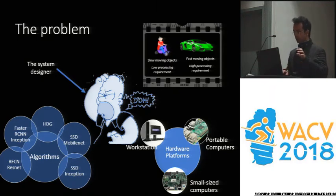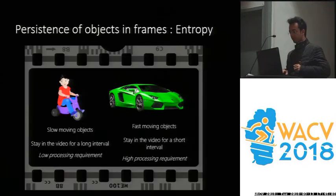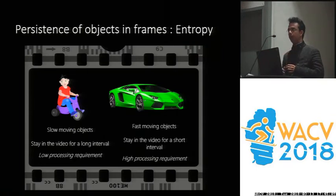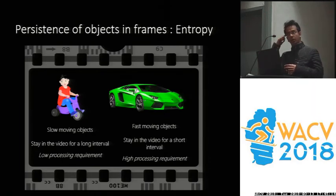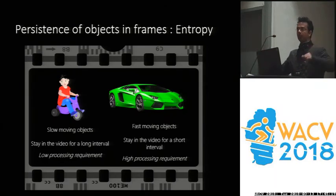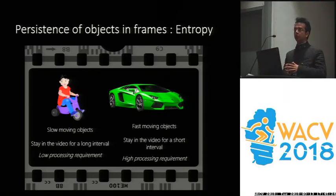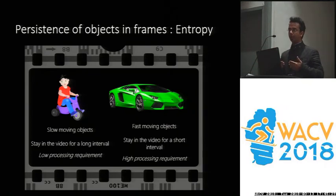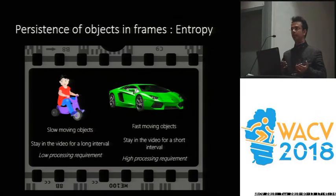I'm going to describe the key ideas which we have incorporated in our work. The first key idea we have called entropy — this is about the persistence of objects in the frames. For example, if you look at a camera feed acquired in this room, the feed would be more or less constant because people are not moving very much. So even if I detect one of the, say, 100 frames being acquired, I can reliably say how many objects are there in the video.